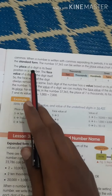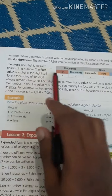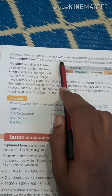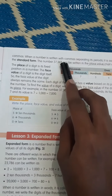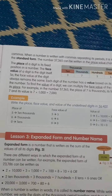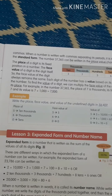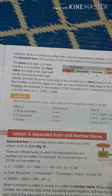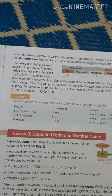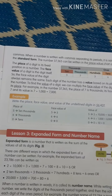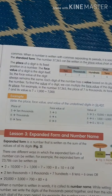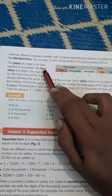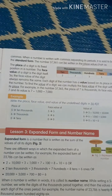Now we will see what place means. Place means where the digit is located. For example, 5 — where is it? It is in the ones place. So the place of 5 is ones. Face value means what number is there — that is the face value. If 5 is there, the answer is 5. Face value remains the same.